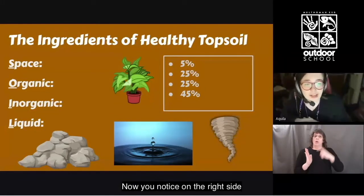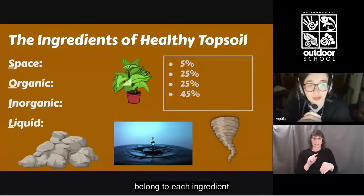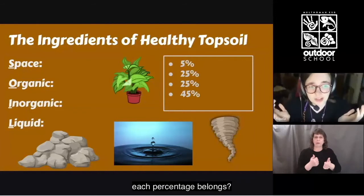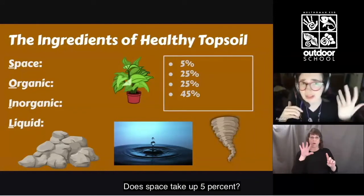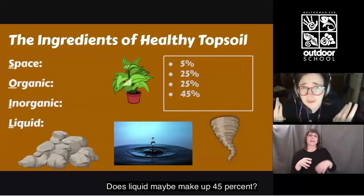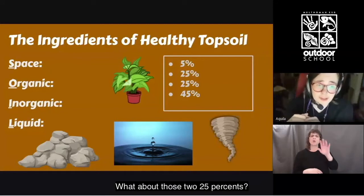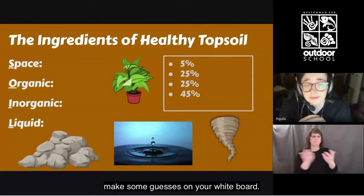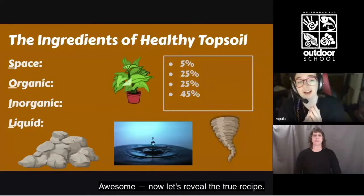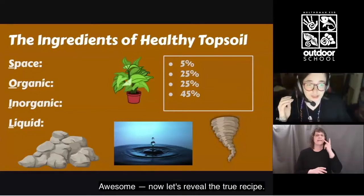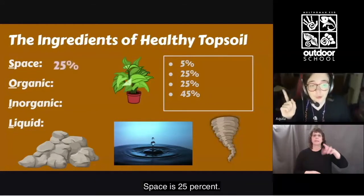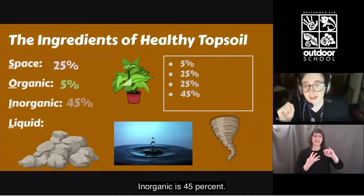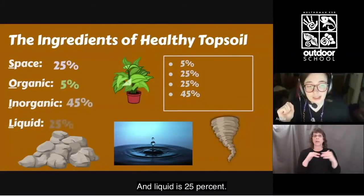On the right side is a box of percentages. Each belongs to one ingredient in the recipe for healthy topsoil. Let's take a guess — where do you think each percentage belongs? Does space take up 5%? Does liquid maybe make up 45%? What about those two 25%? Make some guesses on your whiteboard. Now let's reveal the true recipe: space is 25%, organic is 5%, inorganic is 45%, and liquid is 25%.